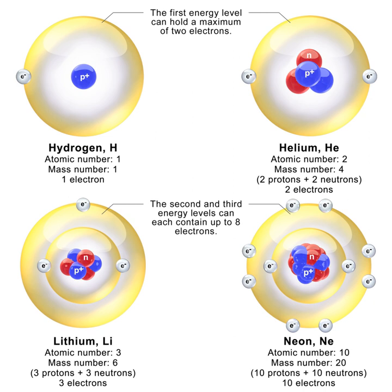A fast neutron is a free neutron with a kinetic energy level close to 1 MeV, hence a speed of approximately 14,000 km per second. They are named fission energy or fast neutrons to distinguish them from lower-energy thermal neutrons and high-energy neutrons produced in cosmic showers or accelerators. Fast neutrons are produced by nuclear processes such as nuclear fission. Neutrons produced in fission have a Maxwell-Boltzmann distribution of kinetic energies from 0 to approximately 14 MeV, a mean energy of 2 MeV for U-235 fission neutrons, and a mode of only 0.75 MeV, which means that more than half of them do not qualify as fast and thus have almost no chance of initiating fission in fertile materials such as U-238 and Th-232.